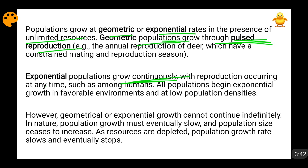For example, humans can reproduce at any point of the year, in any season, in any environment. Humans can produce babies round the year — there is no restriction on their reproduction season, mating season, or growth season. Because of this continuous availability of the reproduction season, the rate of population growth of humans has become exponential, as we have seen over the last many decades.